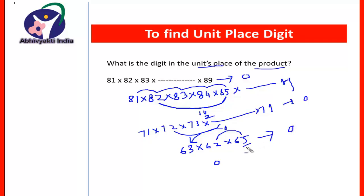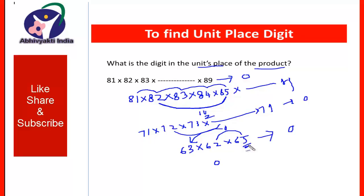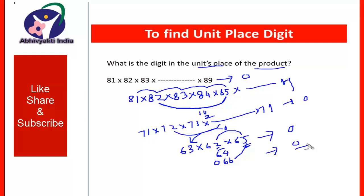Take another example: 63 × 62 × 65. Here 5 × 2 = 10, unit digit 0, then 0 × 3 = 0. So the unit place of the result will also be 0. Be careful: whenever there is a 5 at the unit place in a product and there is any even number at the unit place of another number, the unit place digit of the result will always be 0.